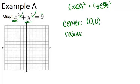Now the radius we figure out by looking at this number at the end and take the square root of it. So the square root of 9 is 3, so the radius is 3.